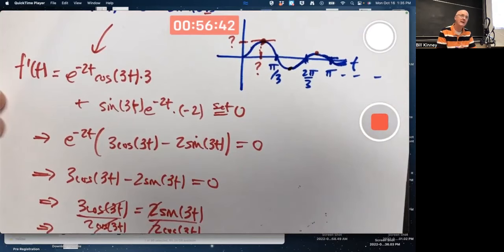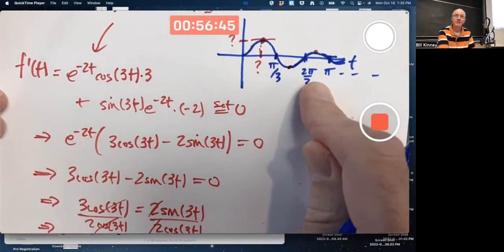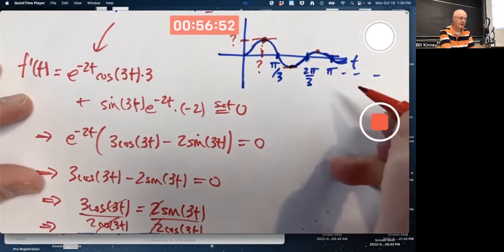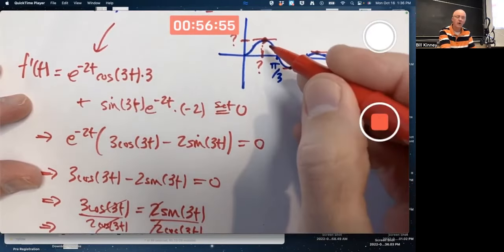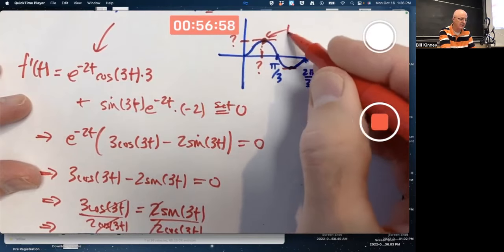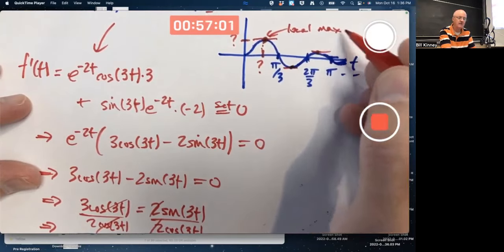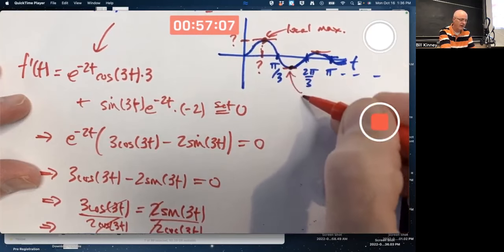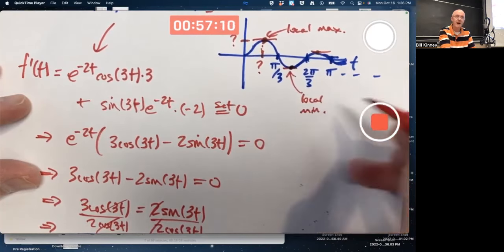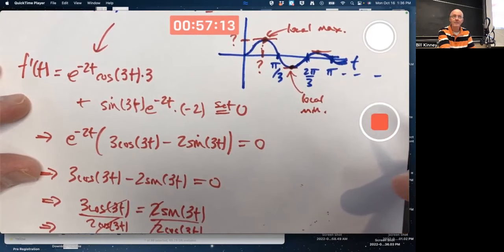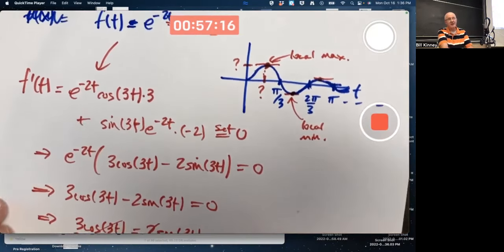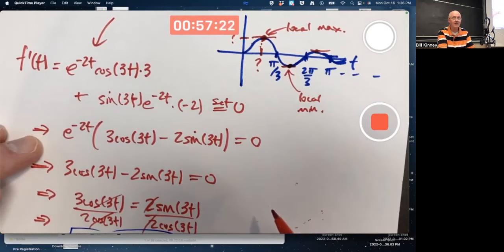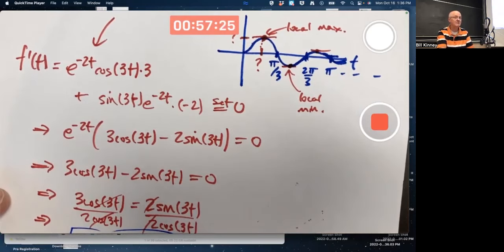The derivative is helping us figure out information about the original function. In particular, where the derivative is 0 tells us where the original function has what we call local extreme points, a local maximum here, like the top of a hill. It's like a little hill here. It's like the top of the hill. And a local minimum there. The bottom of a valley. Yes, it's more complicated because it involves both cosine and sine and E, which again, we could ignore. But it still is a problem that's doable.